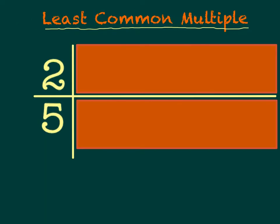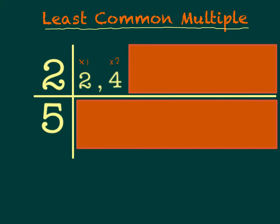We're going to begin by finding the least common multiple of the numbers 2 and 5. And like any good mathematician, I am going to use a chart to help organize my information. A multiple is what you get when you multiply a number, such as 2, by another factor. If you want to find sequential multiples, it's going to look a lot like skip counting. I'm going to begin by multiplying 2 by 1 to get my first multiple of 2, then multiply by 2 to get 4, and I'll continue until I've listed at least 5 to 10 multiples in order.